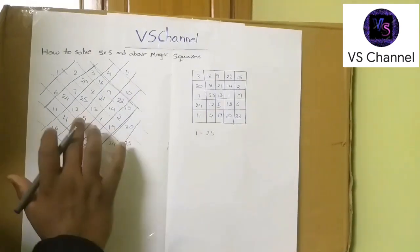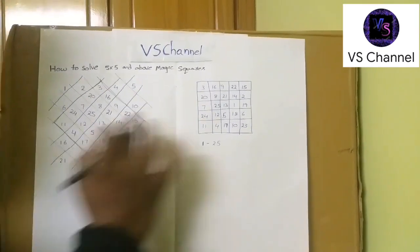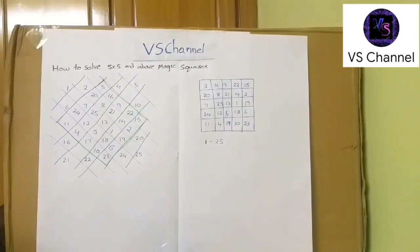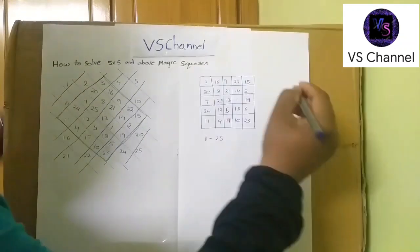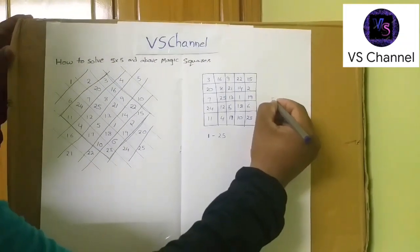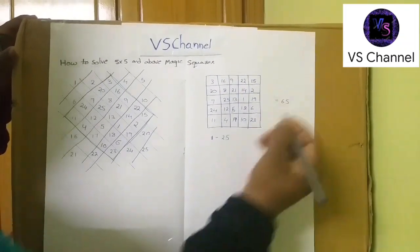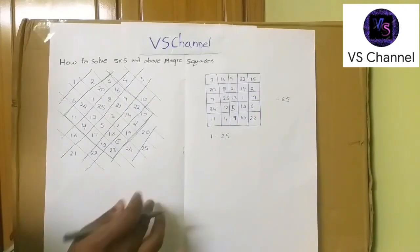With this, the 5 into 5 magic square is completed. Here I represent this 5 into 5 square here. Now we can check whether it satisfies the condition or not. So if you add any row, the sum should be 65. Either column wise or row wise, diagonal wise.